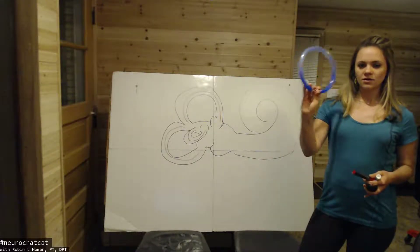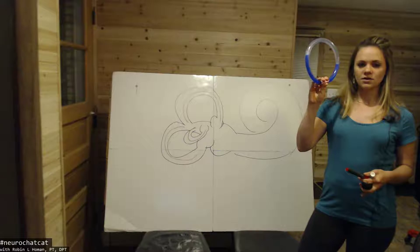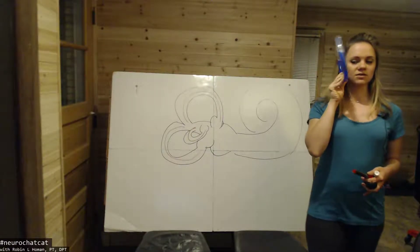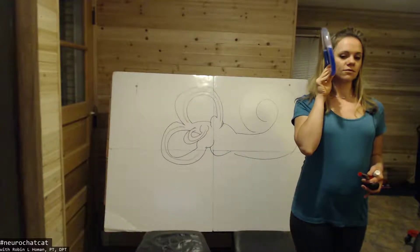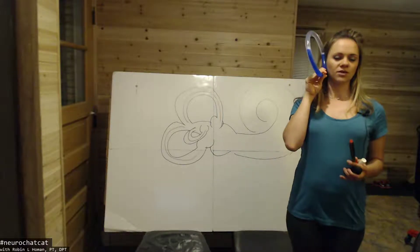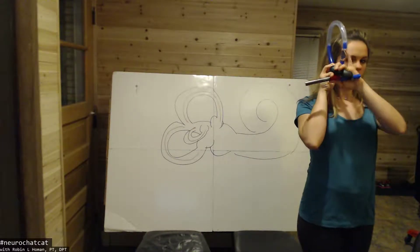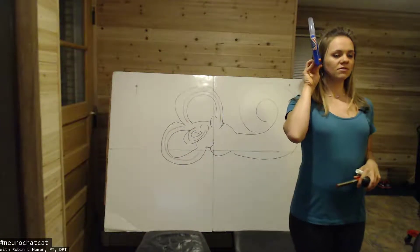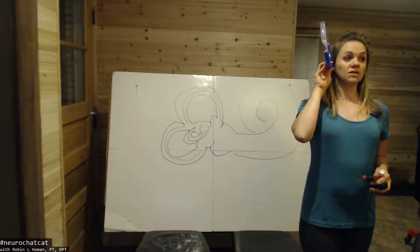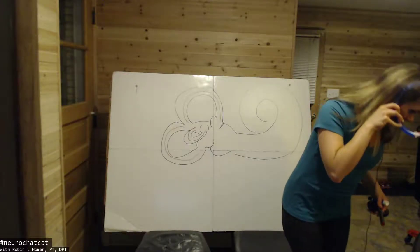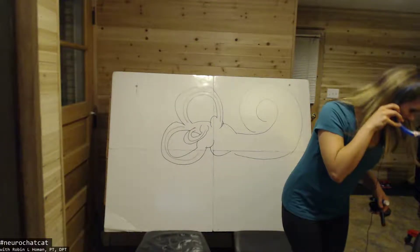And so here's a semicircular canal. Let's say it's my anterior. So my anterior is about 45 degrees off to the plane. And we're going to look at this little piece of tape there. And that's going to be the cupola. All right. And so what happens is, if I want to stimulate that anterior canal, I've got to bend forward and come back.